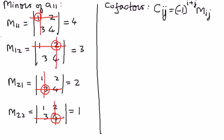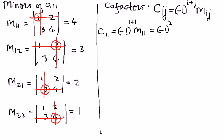If we want to find the cofactor of element A11, it is C11 equal to negative 1 raised to the power of i equals 1 and j equals 1, so 1 plus 1 equals 2. M11 we found is 4. So negative 1 raised to the power of 2 is 1, times 4 gives us 4. Therefore, C11 is equal to 4.